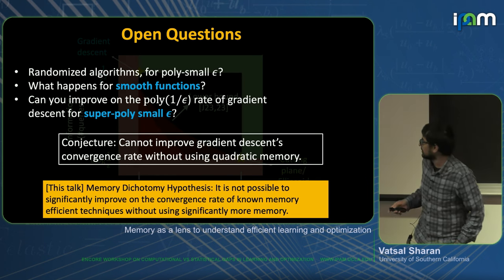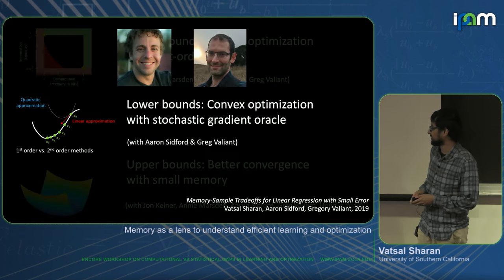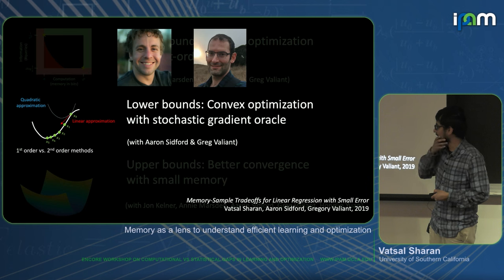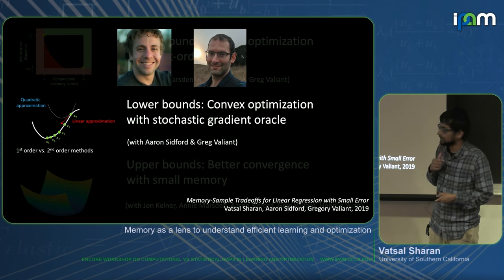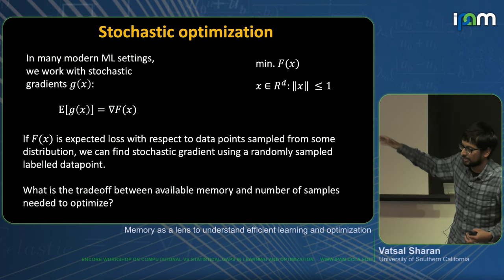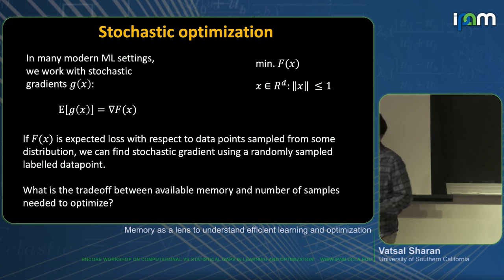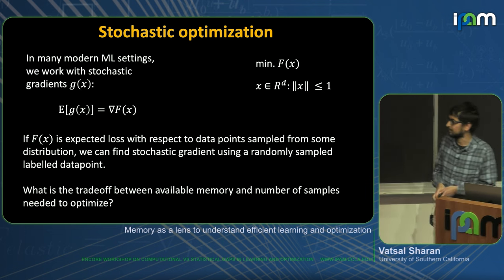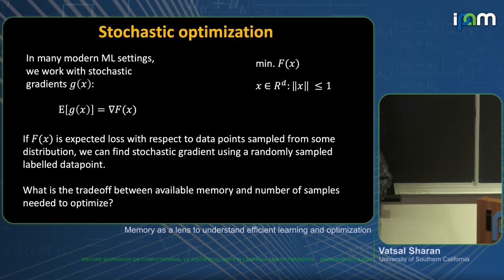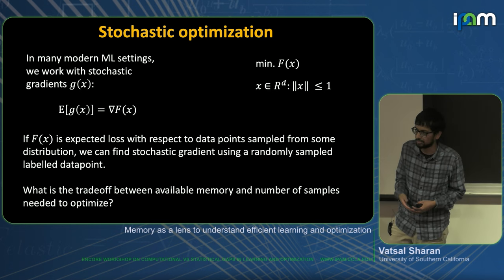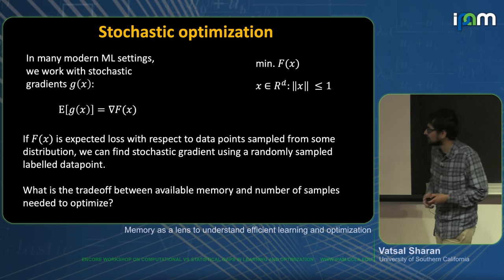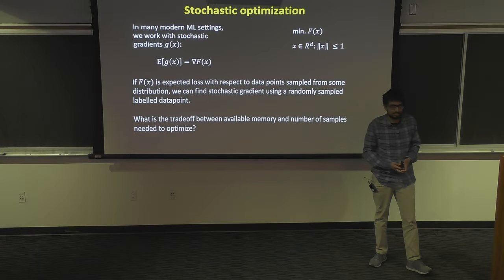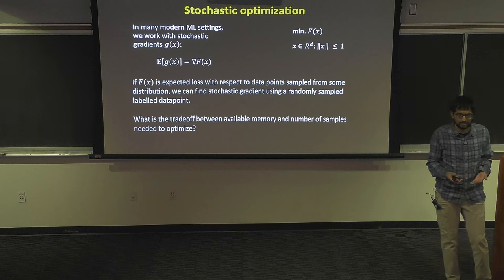That's the first part. Now I'll talk about the second setting, and I'll spend less time on this — joint work with Aaron and Greg. So far we were working with access to a gradient oracle. In many ML settings we don't actually work with a gradient oracle because it's too expensive. It's much easier to work with a stochastic gradient oracle where you get access to random data points and find the gradient with respect to that data point.